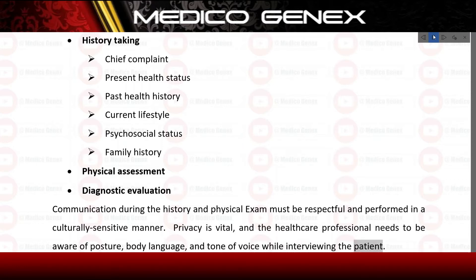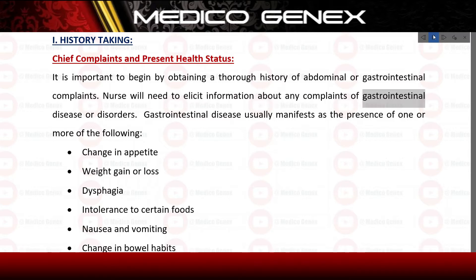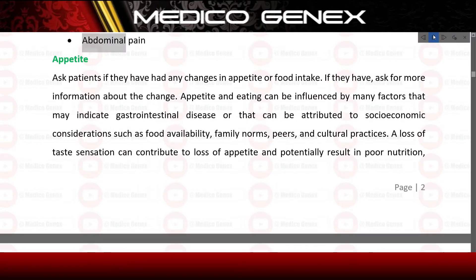In history taking, chief complaints, and present health status, it is important to begin by obtaining a thorough history of abdominal or gastrointestinal complaints. The nurse will need to elicit information about any complaints of gastrointestinal disease or disorders. GI disease usually manifests as one or more of the following: change in appetite, weight gain or loss, dysphagia, intolerance to certain foods, nausea and vomiting, change in bowel habits, and abdominal pain.